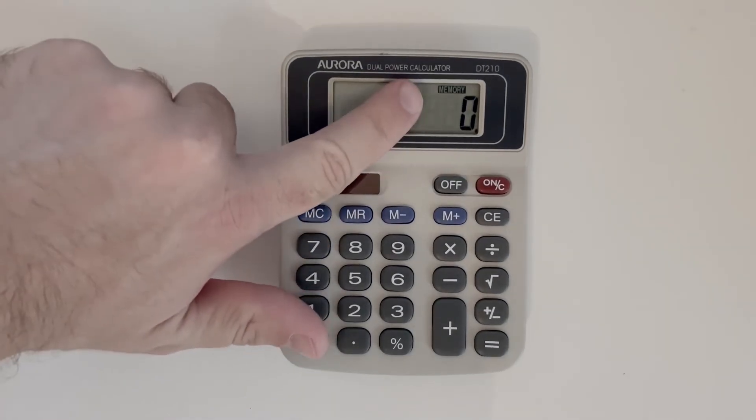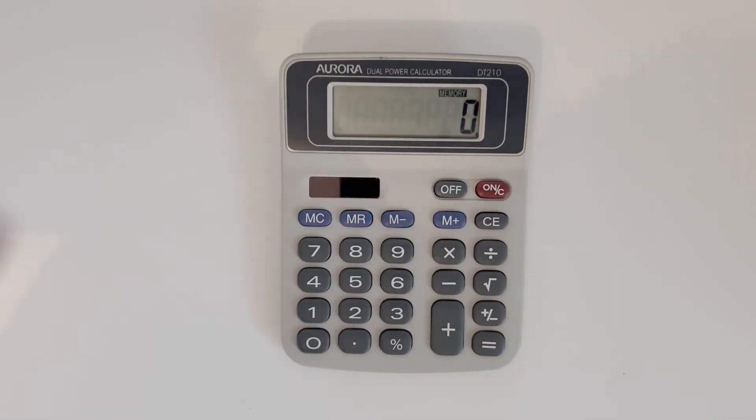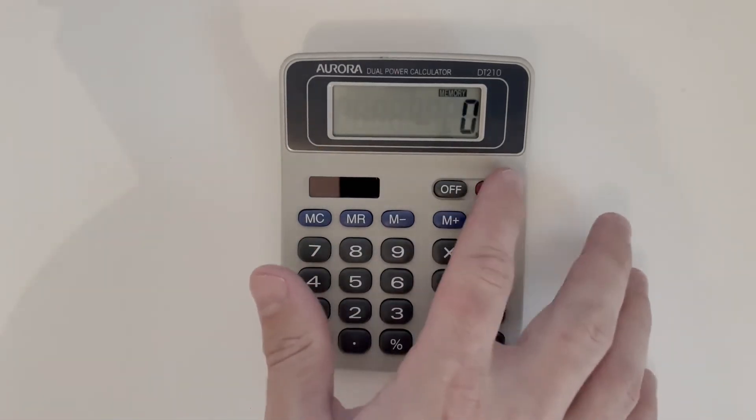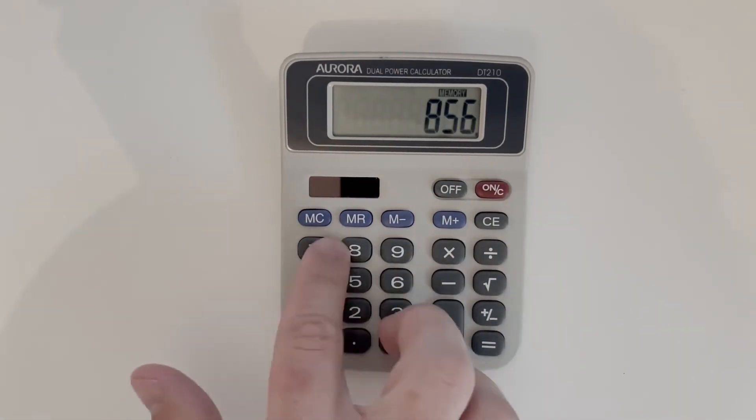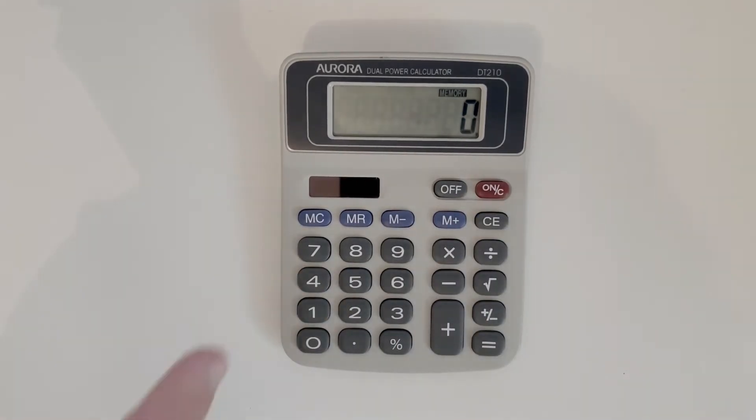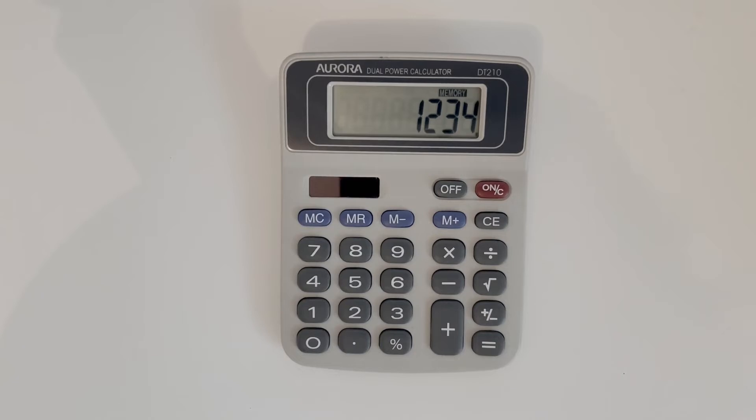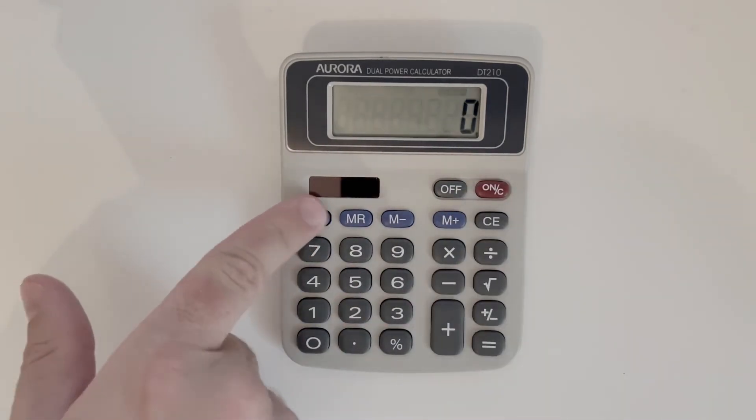You also see a memory indicator up there that means there's a number in memory. To clear it, we click MC, and to recall it, we click MR. If I type in a number, say 1234, I can save it by hitting M plus and the memory icon appears. I can now clear the calculator, do whatever I want, type in random numbers, and if I need that number again, I just hit MR memory recall and there's that number. To clear it, I hit MC.